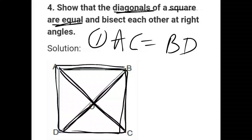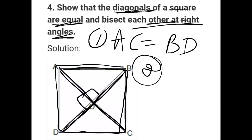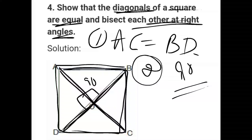First, I will tell you how to prove that the diagonals are equal. Second, I will prove that they bisect each other at right angle — that both angles are 90 degrees, cutting each other. So second, I will prove that they bisect each other at right angle.